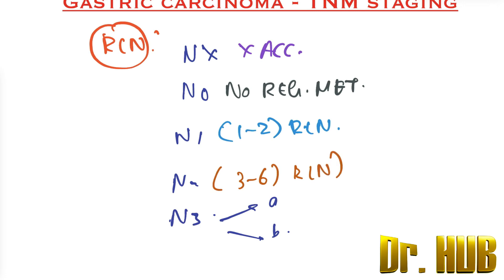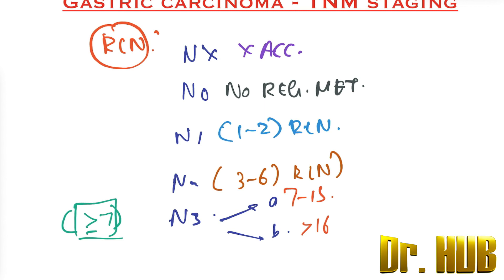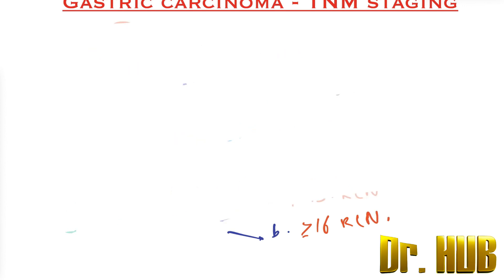N3 means metastasis in seven or more regional lymph nodes. N3a means 7 to 15 regional lymph nodes involved, and N3b means 16 or more regional lymph nodes involved.